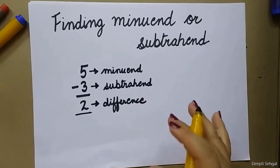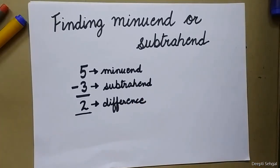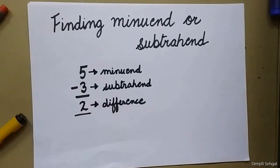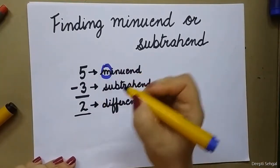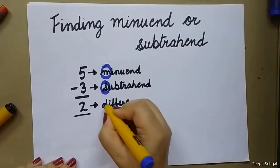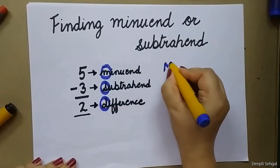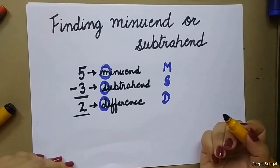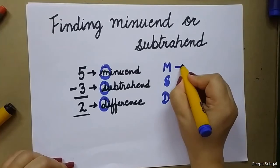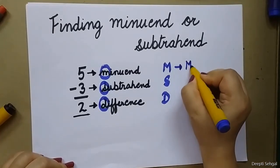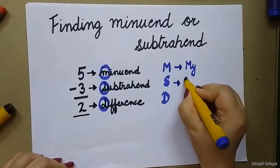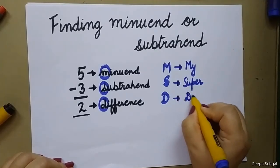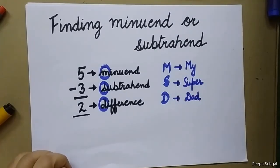If you forget what is minuend, what is subtrahend, what is difference, then follow this simple step. M, S, D — remember it as 'My Super Dad'.